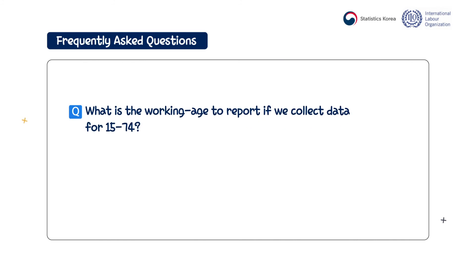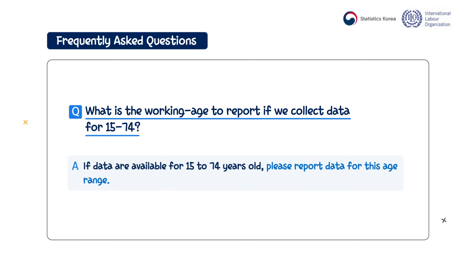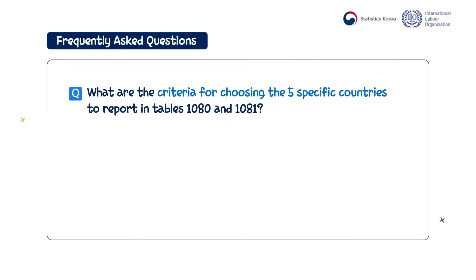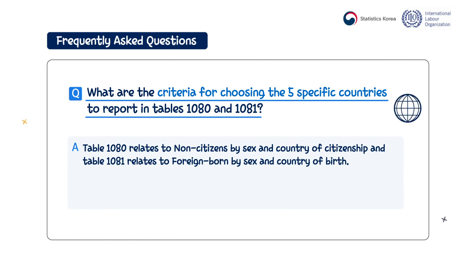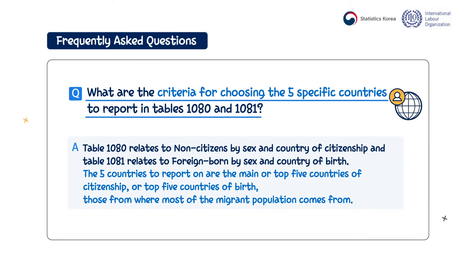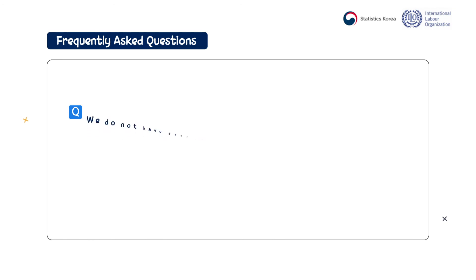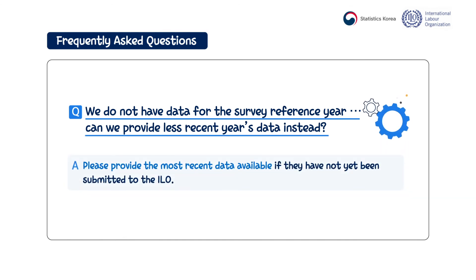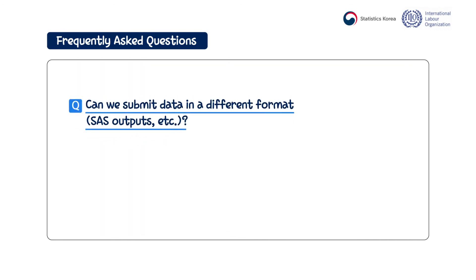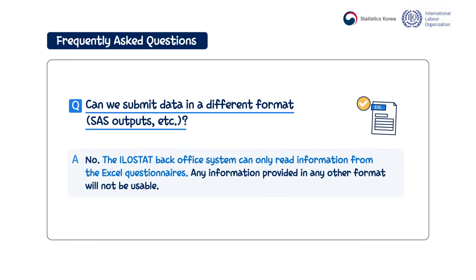What is the working age to report if we collect data for 15 to 74? If data are available for 15 to 74 years old, please report data for this age range. What are the criteria for choosing the five specific countries to report in tables 1080 and 1081? The five countries to report on are the main or top five countries of citizenship or top five countries of birth — those from where most of the migrant populations come from. We do not have data for the survey reference year — can we provide less recent years data instead? Please provide the most recent data available if they have not yet been submitted to the ILO. Can we submit data in a different format? No — the ILO STAT back-office system can only read information from the Excel questionnaires, and any information provided in any other format will not be usable.